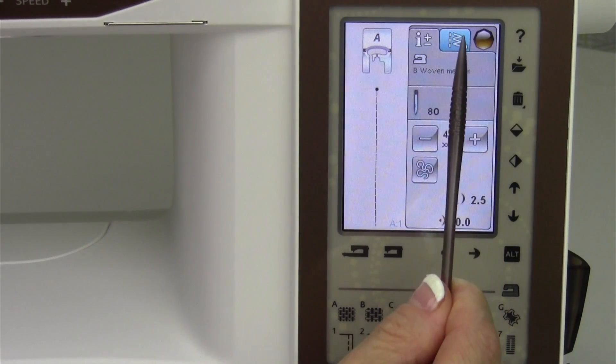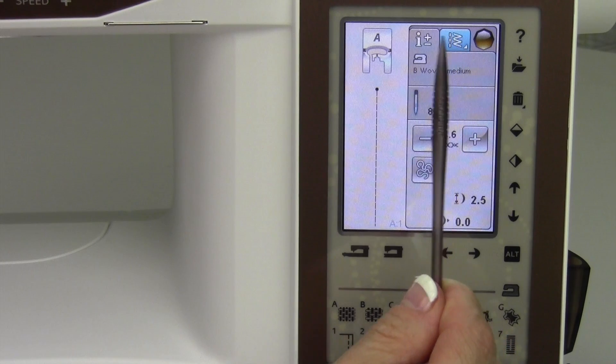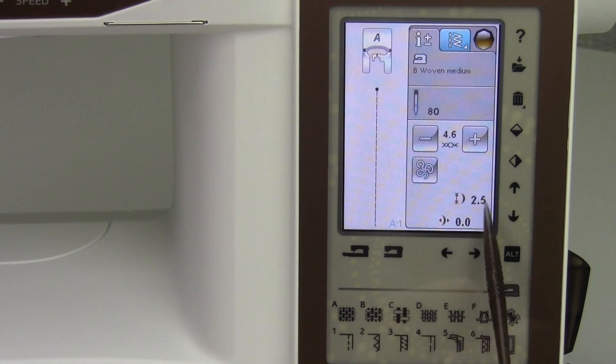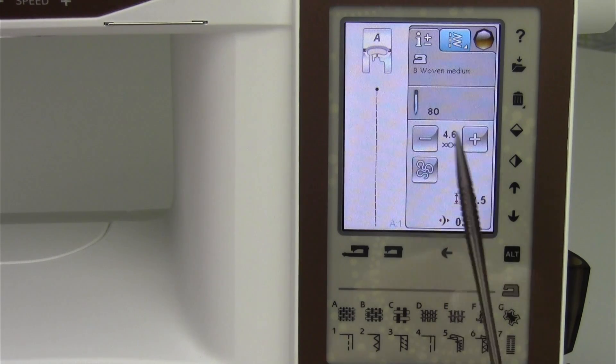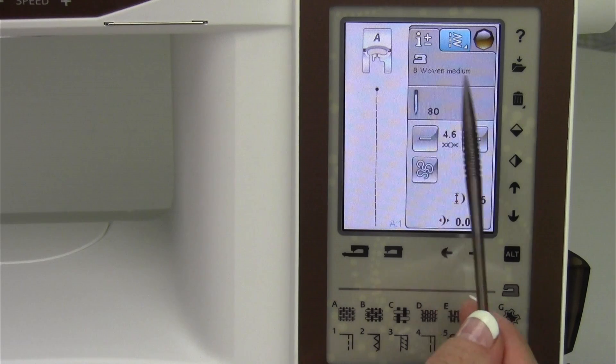We can come over here to the stitch menu. These are like little tabs we can go between. This is the sewing information. We have everything from stitch length, needle positions, tension, free motion setting, what needle to use for the fabric we've picked.